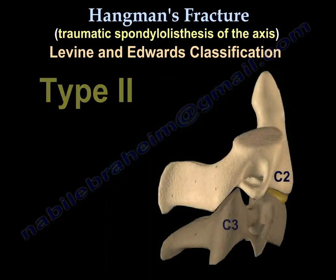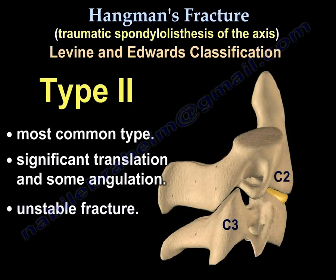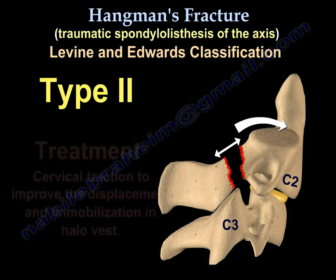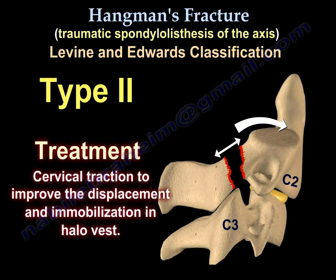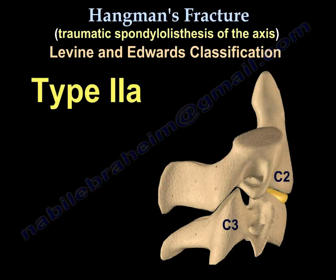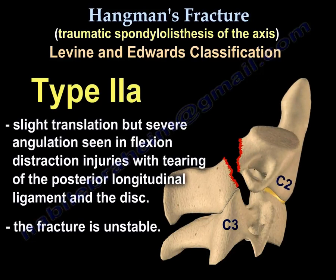Type 2 is the most common type. There will be significant translation and some angulation, making it an unstable fracture. Treatment involves cervical traction to improve the displacement, followed by immobilization in a halo vest.